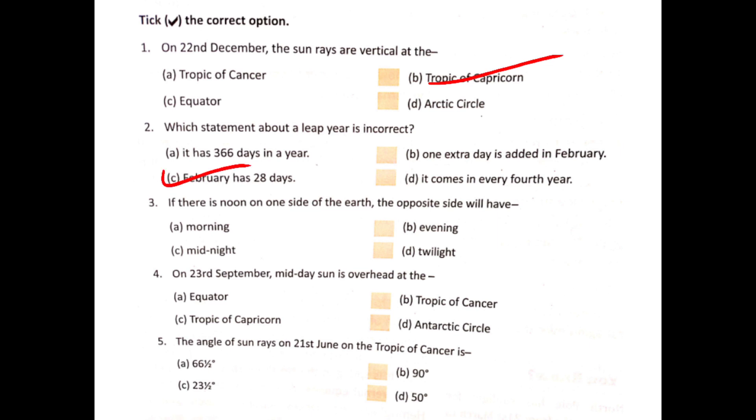If there is a noon on one side of the Earth, the opposite side will have midnight.